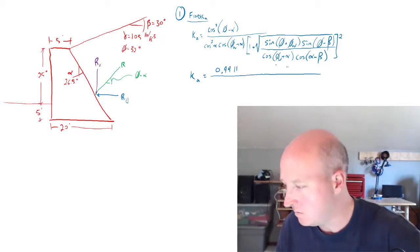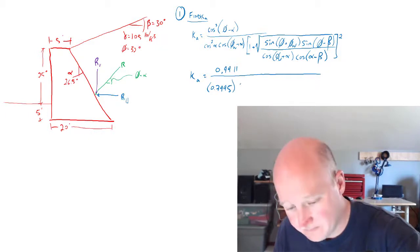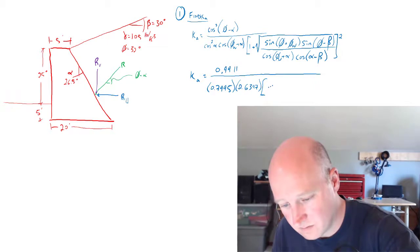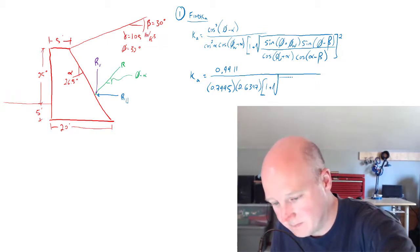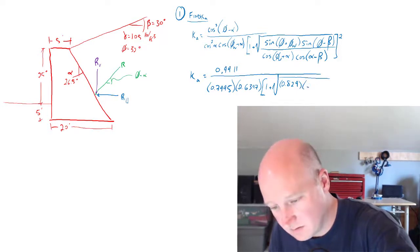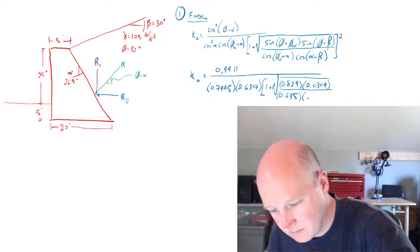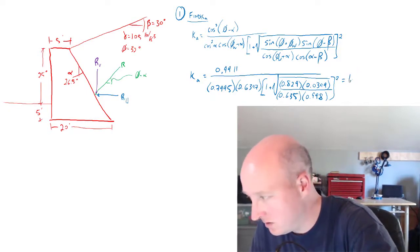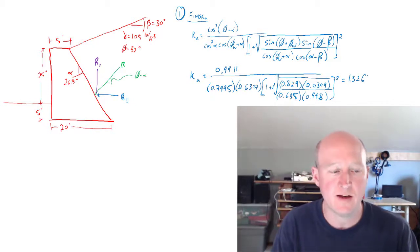So the numerator is 0.9911. Cosine squared term is 0.7995. So k is 1.326. And in this case it is the face of the wall. So that's something that's important to point out.